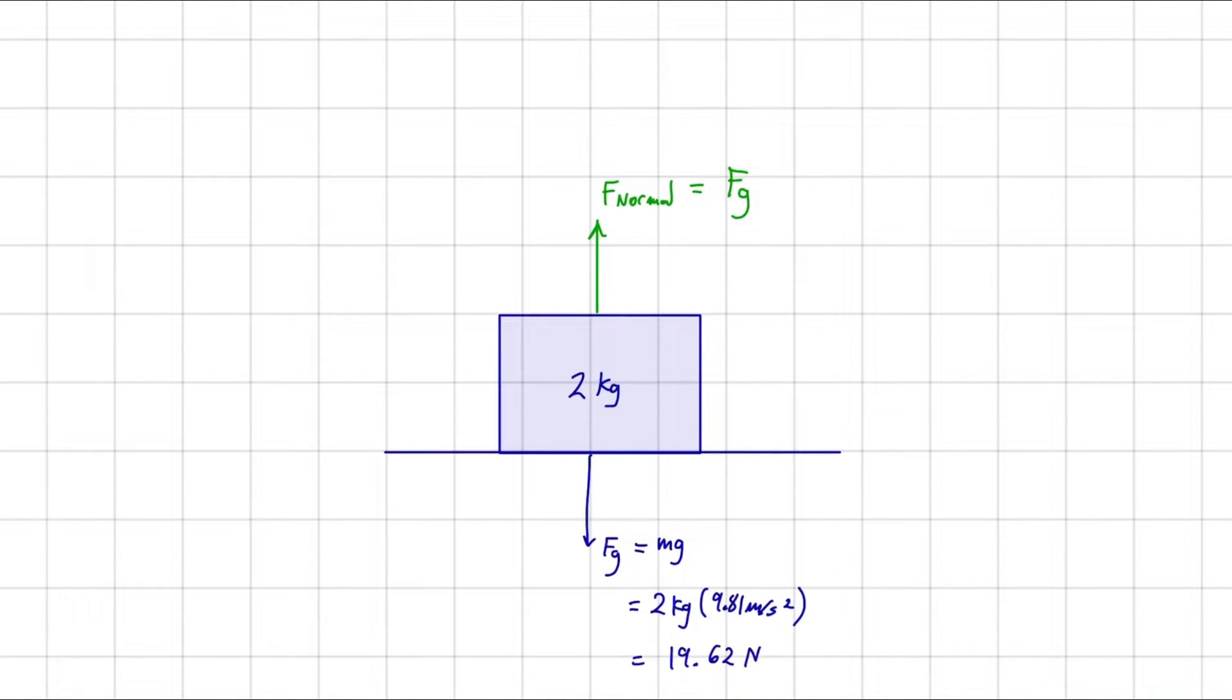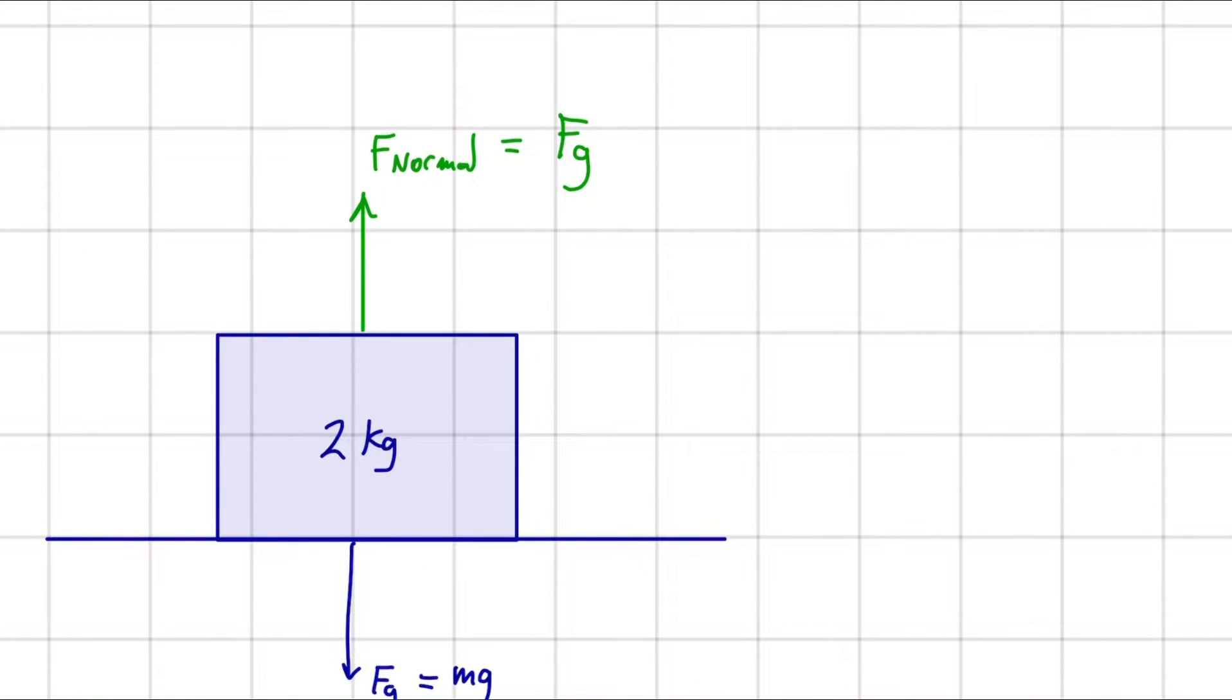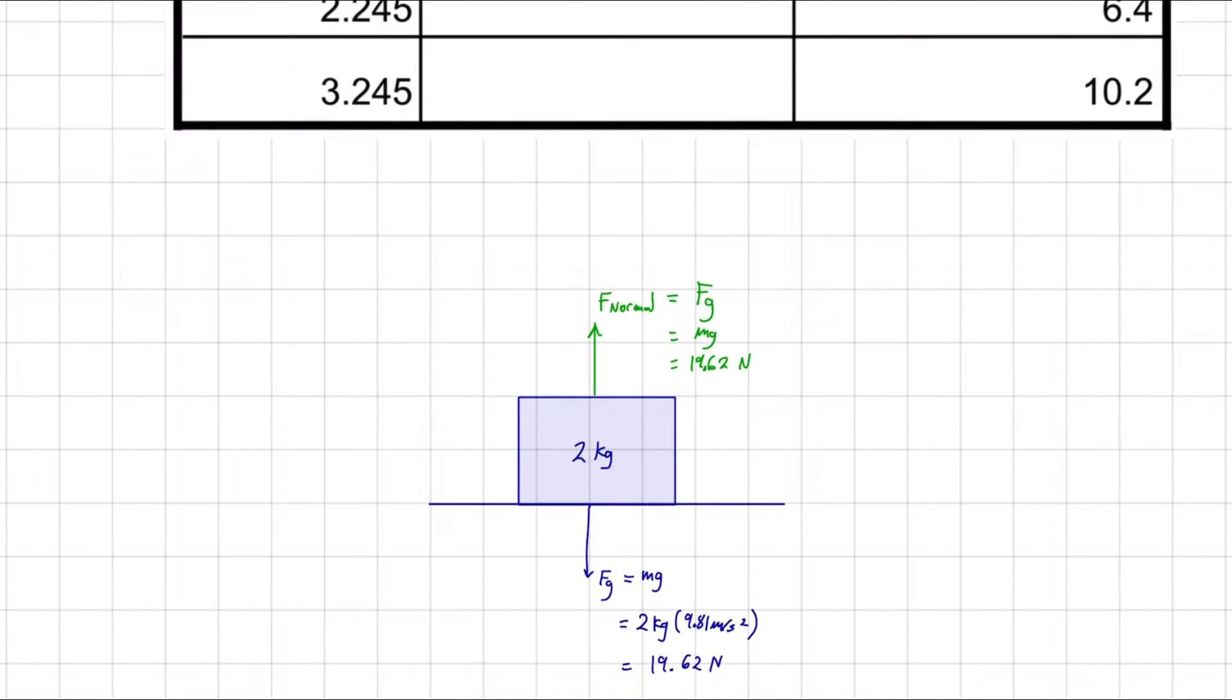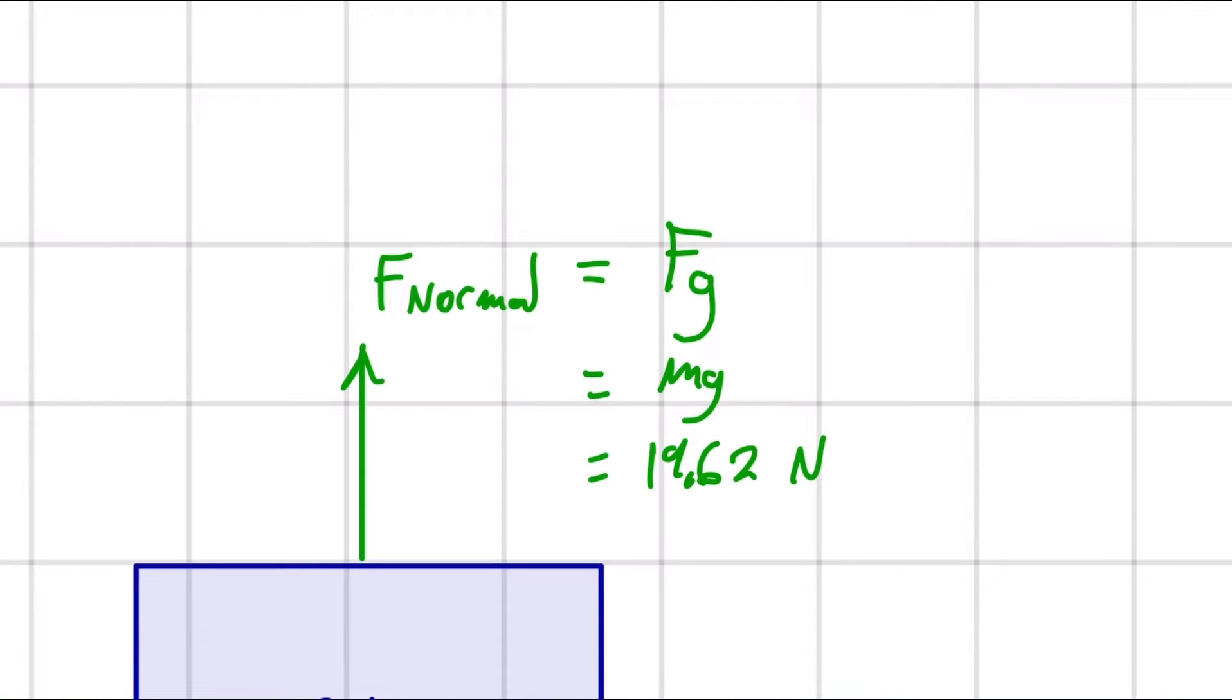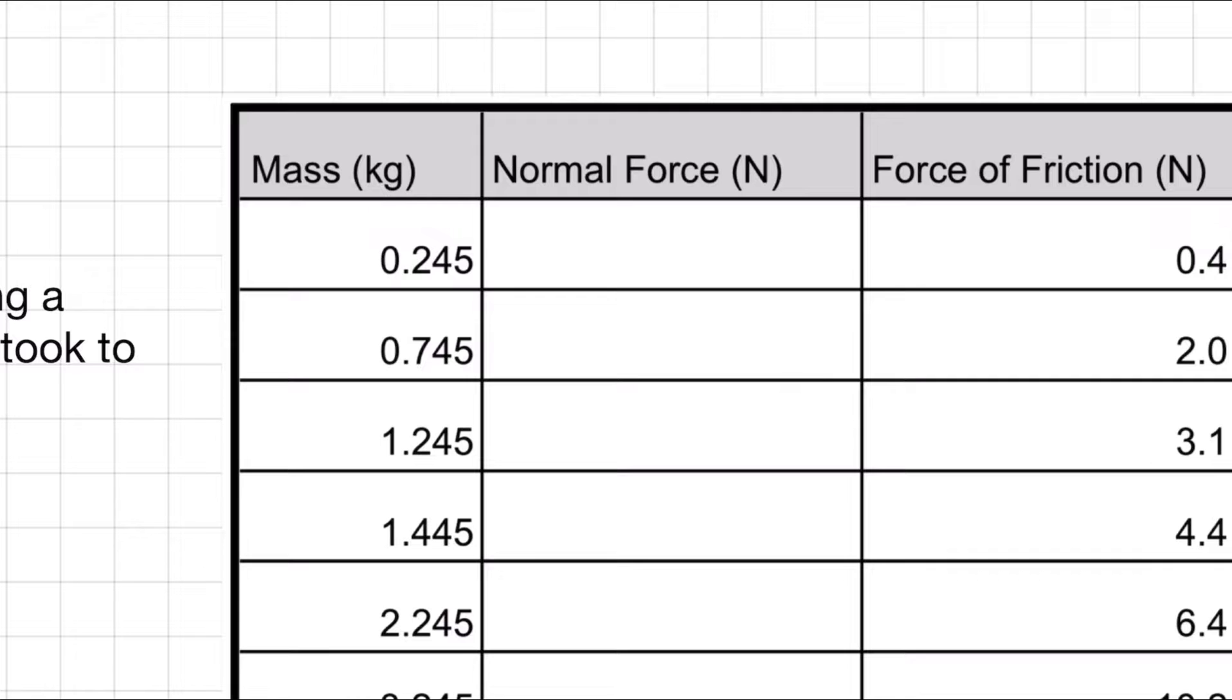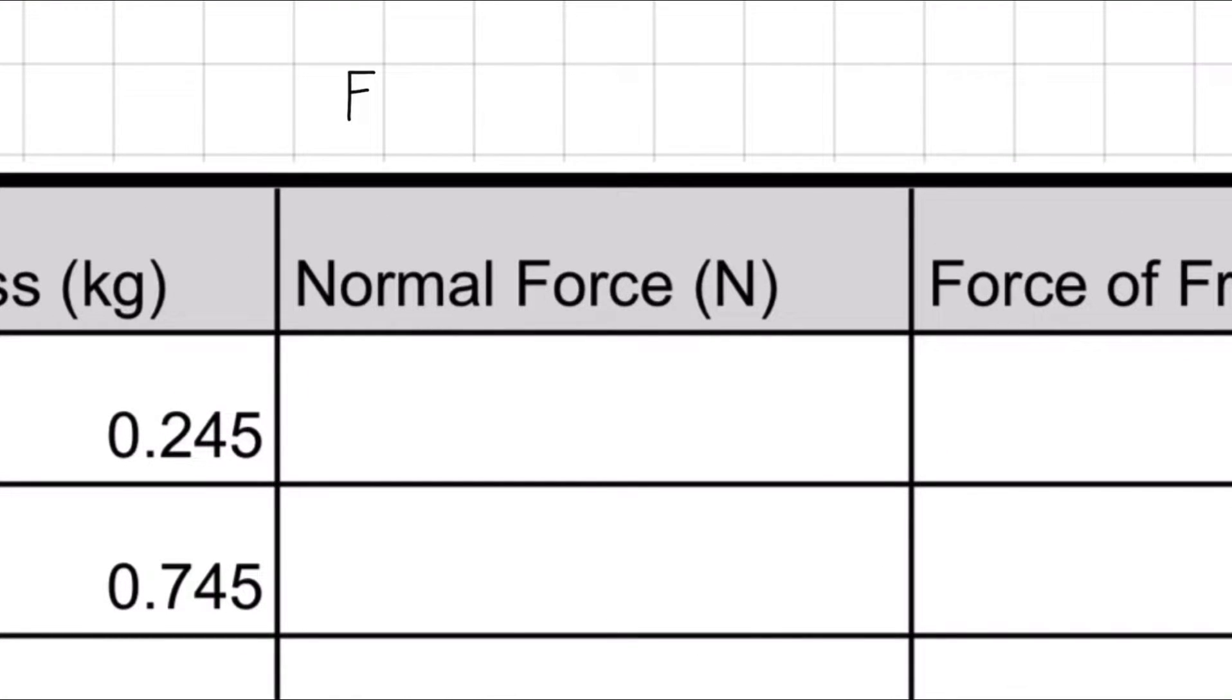Because they're equal, our box is sitting still. It's not moving up or down. So F normal in this case equals F_g, which equals mg, which is 19.62 newtons. So the normal force is equal to the mass times the gravitational constant. Let's apply that. Normal force, F_n, is equal to mg.